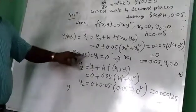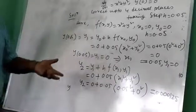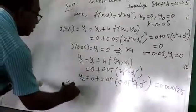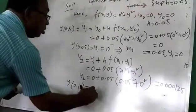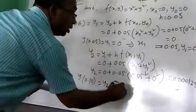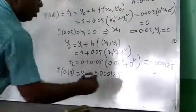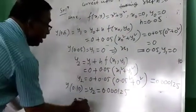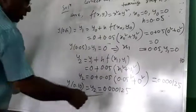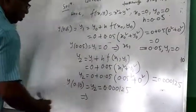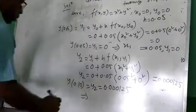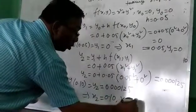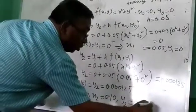So 0.05 plus 0.05 equals 0.10, meaning y(0.10) equal to 0.000125. This is your y2, where x2 equal to 0.10 and y2 equal to 0.000125.